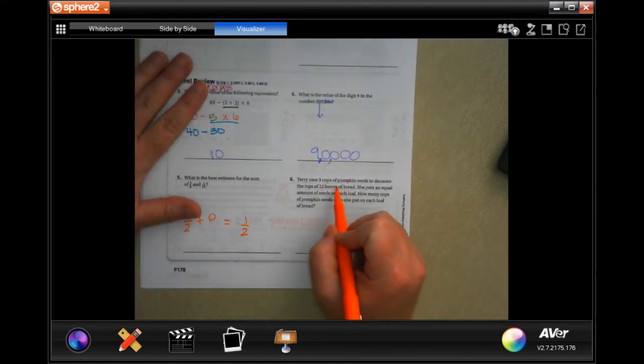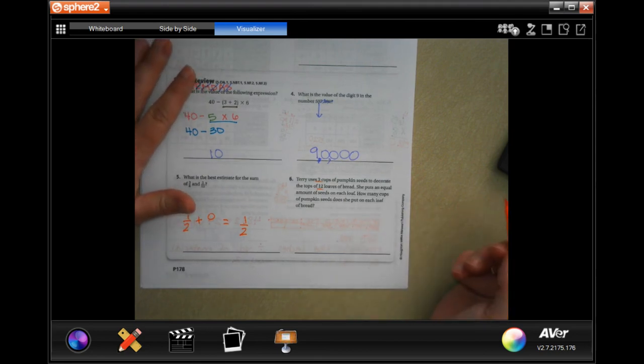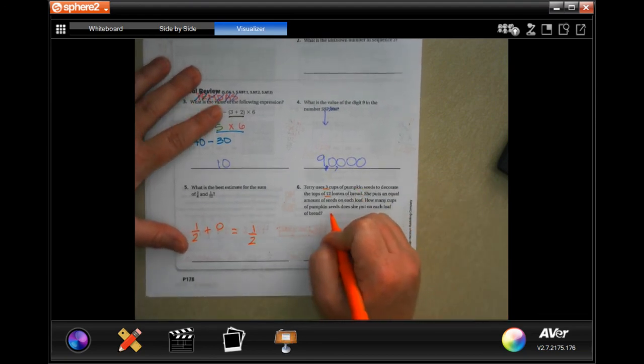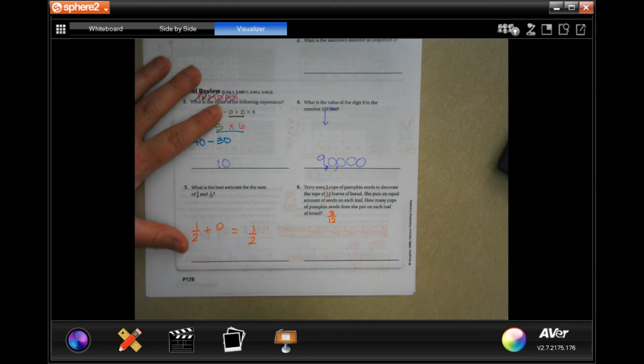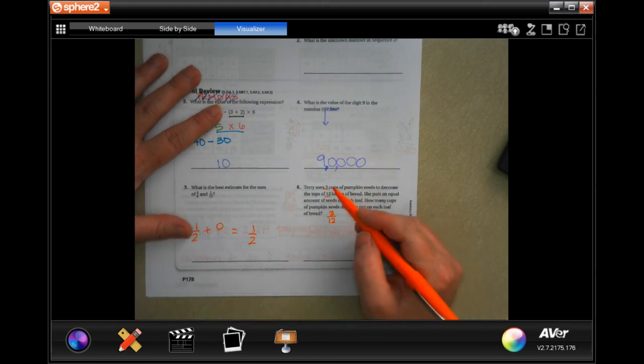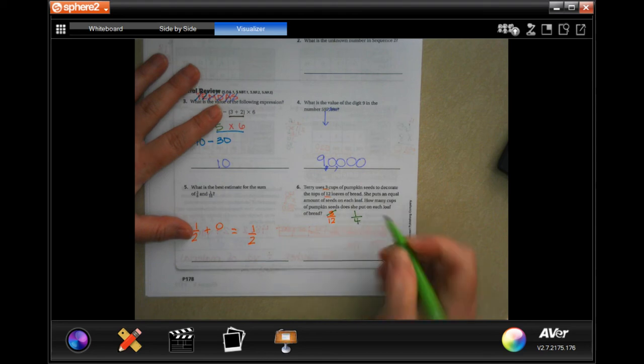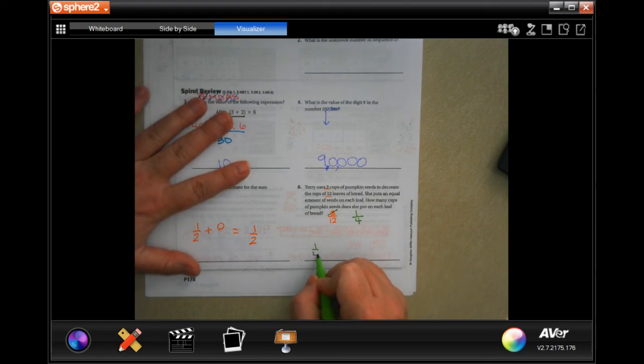Jerry uses three cups of pumpkin seeds to decorate 12 loaves of bread, putting an equal amount of seeds on each loaf. How many cups of pumpkin seeds did he put on each loaf? Three cups divided by 12. Remember that a fraction is just division. Three divided by 12, I'm just going to reduce that: three goes into three one time, three goes into twelve four times. It's going to be a quarter cup.